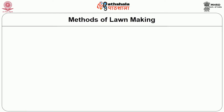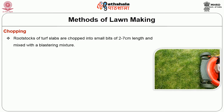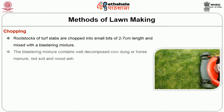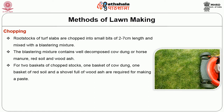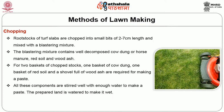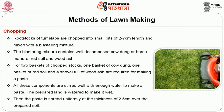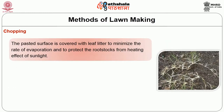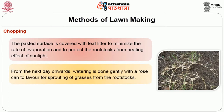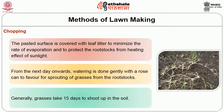The final method of lawn making is chopping. Root stalks of the turf slabs are chopped into small pieces of 2 cm length and mixed with a blasting mixture. The blasting mixture contains well-decomposed cowdung or horse manure, red soil and wood ash. For 2 baskets of chopped stalks, 1 basket of cowdung, 1 basket of red soil and a shovelful of wood ash are required to make a paste. All components are stirred well with enough water to make a paste. The prepared land is watered to make it wet, then the paste is spread uniformly at a thickness of 2.5 cm over the prepared soil. The pasted surface is covered with leaf litter to minimize evaporation and to protect root stalks from the heating effect of sunlight. From the next day onwards, watering is done gently with a rose can to favor sprouting of grasses. Generally, grasses take 15 days to sprout in the soil.